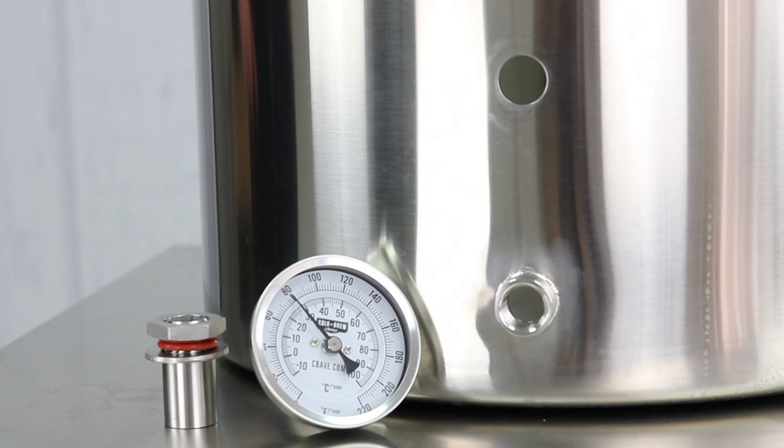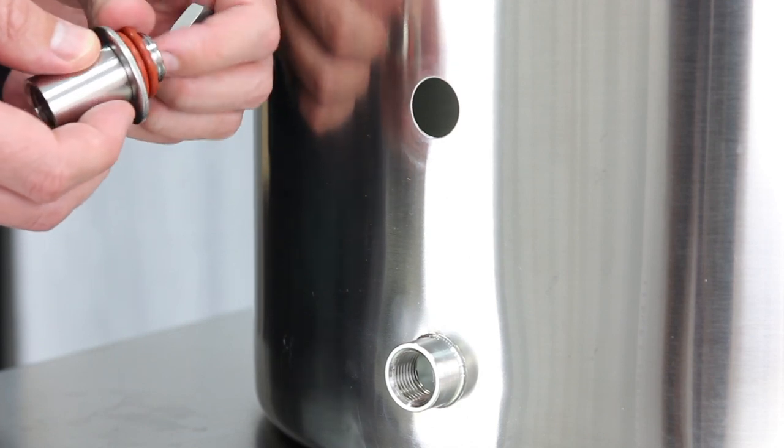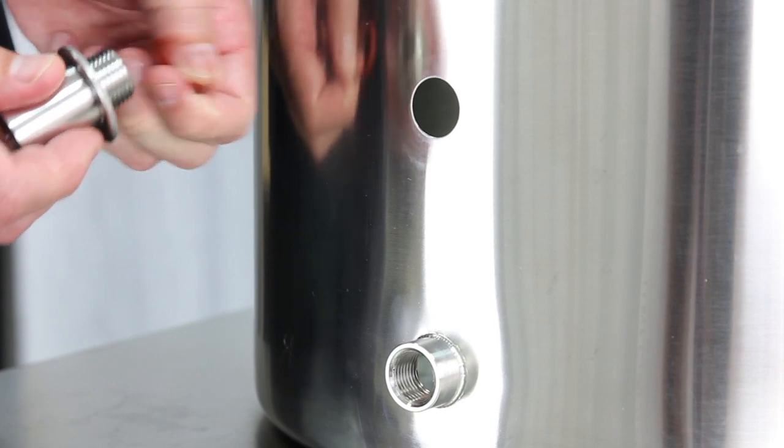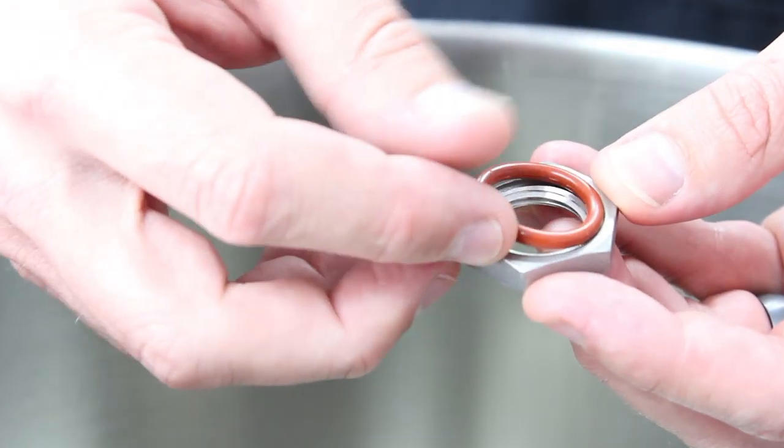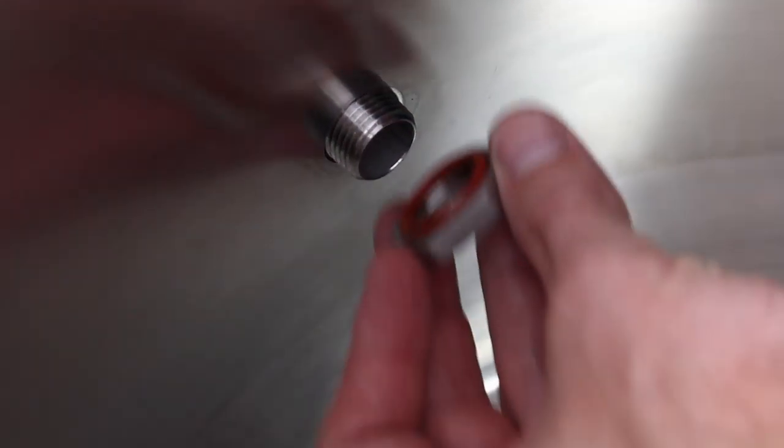If you are using our deluxe kit, you will have a thermometer and bulkhead fitting. Begin by removing both of the o-rings from the bulkhead fitting. Note that your bulkhead fitting comes with two o-rings, but you will only need one. Insert the o-ring into the recessed portion on the nut and secure tightly.